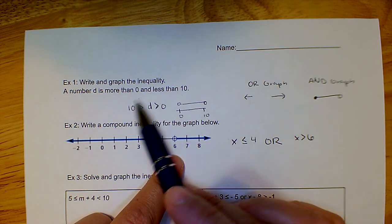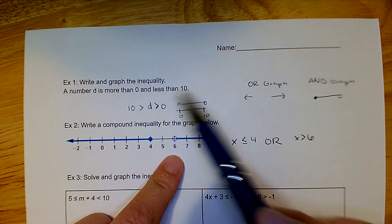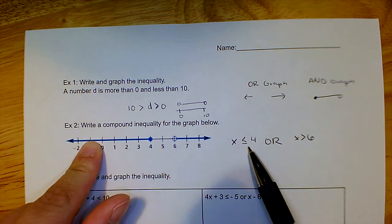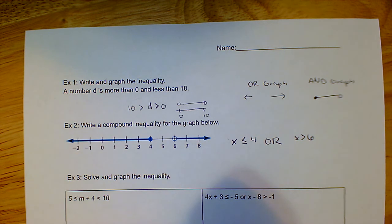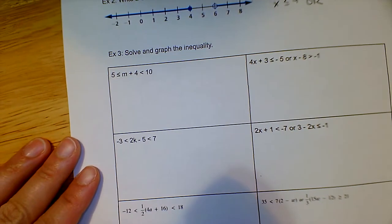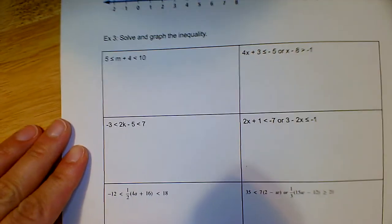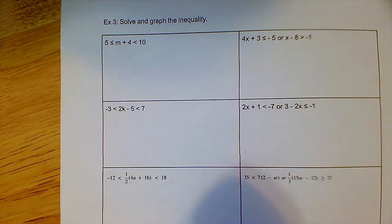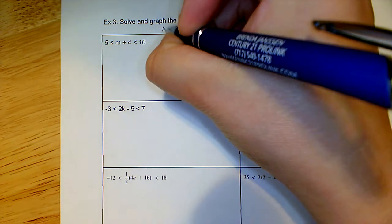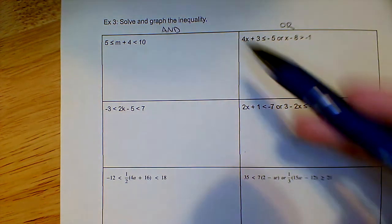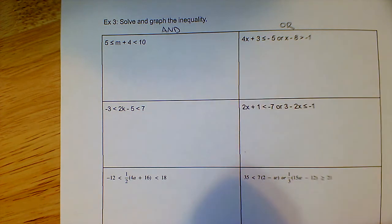In an 'and' situation it's all one — you only have one line. In an 'or' situation, the arrows go in opposite directions and you have two separate inequalities. Now let's talk about solving and graphing these. On our sheets, the left side has all 'and' situations and the right side has all 'or' situations, so I'll work through the 'and' ones first.